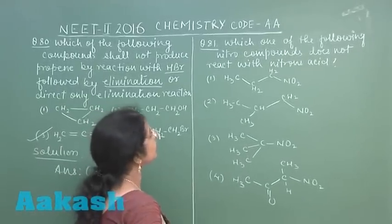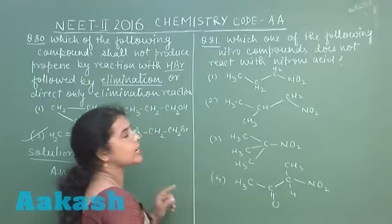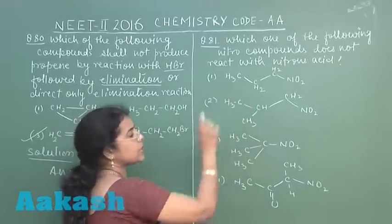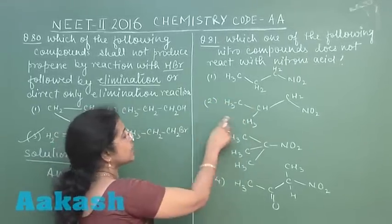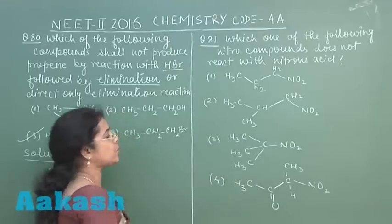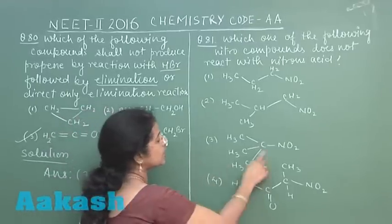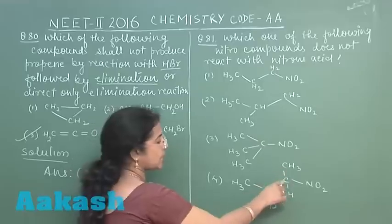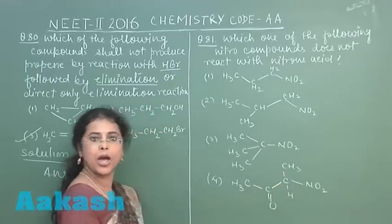Which one of the following nitro compounds does not react with nitrous acid? The first option is primary nitro alkane, second option is primary nitro alkane, third option is tertiary nitro alkane, and fourth option is again secondary nitro alkane.